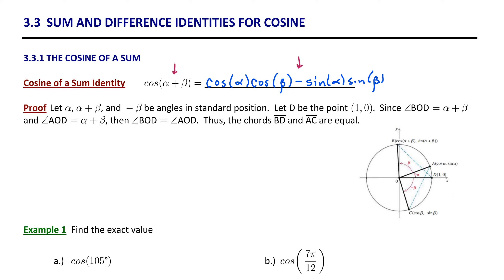Let's construct the proof for this identity. The diagram with the circle will be a useful way to visualize this relationship. On this circle we have angle alpha and angle beta, so this would be angle alpha plus beta, and we have negative beta constructed here in standard position. We'll name point D as the ordered pair (1, 0), and we have other points B, O, A, and C. If we consider angle BOD, we can see that the size of that angle is alpha plus beta.